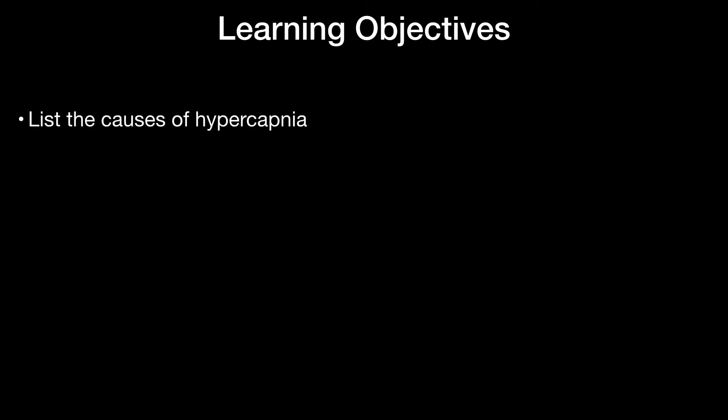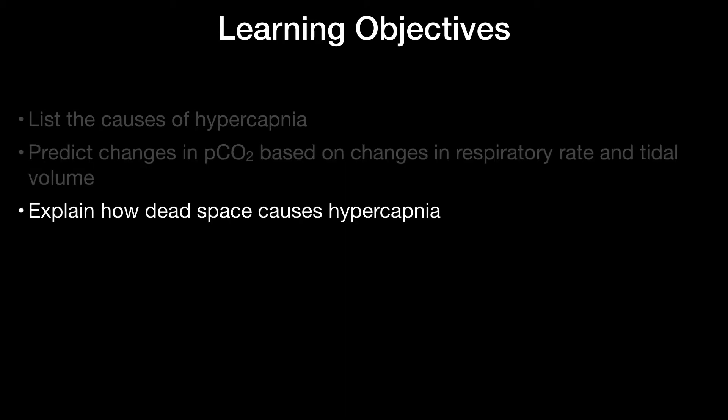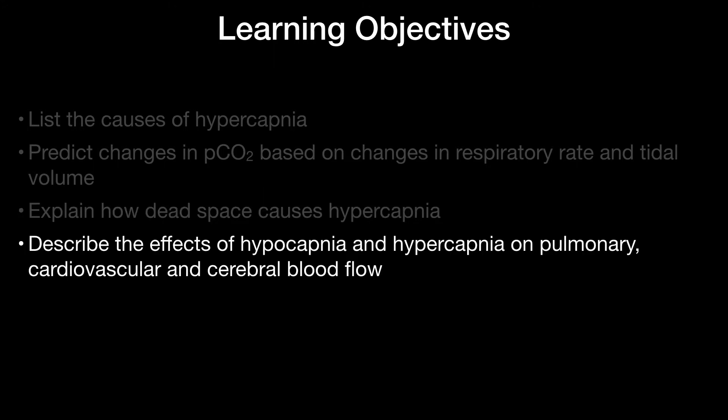Let's talk about partial pressure of CO2 derangements. Here are the learning objectives for this short session. We're going to list the causes of hypercapnia, predict changes in PCO2 based on changes in respiratory rate and tidal volume, explain how dead space causes hypercapnia, and then describe the effects of hypocapnia and hypercapnia on pulmonary, cardiovascular, and cerebral blood flow.